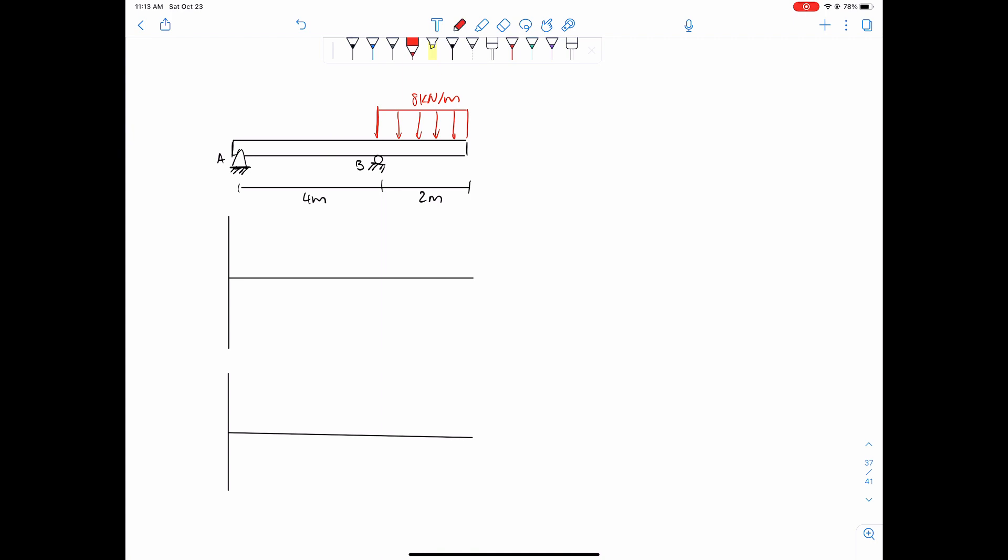Alright, first step you're going to do in these problems is just solve for the reactions. So we want sum of forces in the y direction upwards being positive and set that equal to zero, and then we have the forces Ay, technically Ax, and then By. These are the reactions we want to solve for. So sum of forces in the y direction, we have Ay plus By minus 8 times 2, so 16. That's just from the distributed load, total distributed load, and then that equals zero. So Ay plus By equals 16.